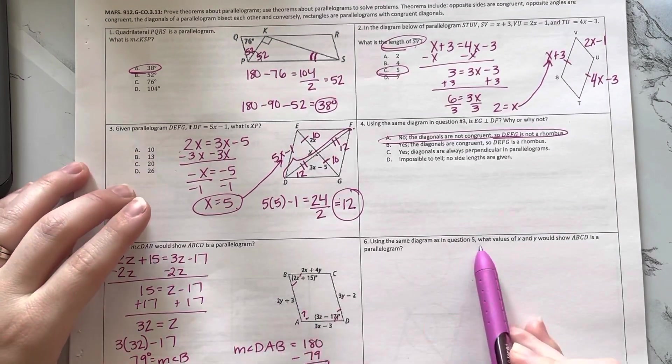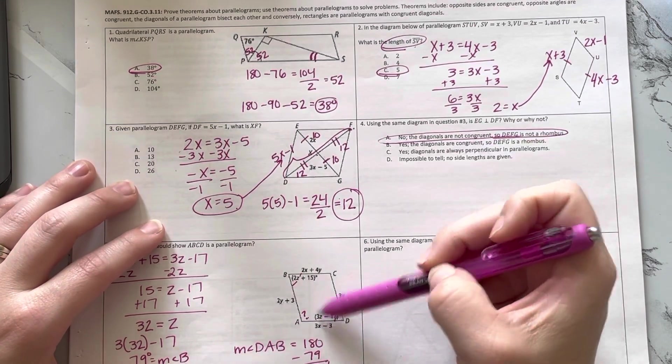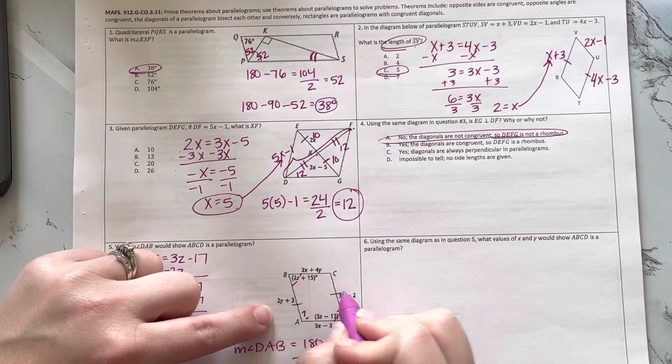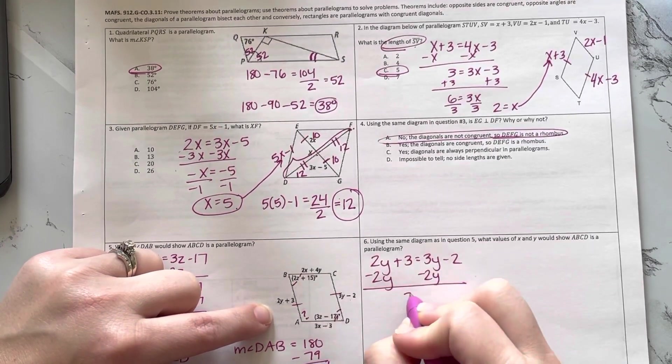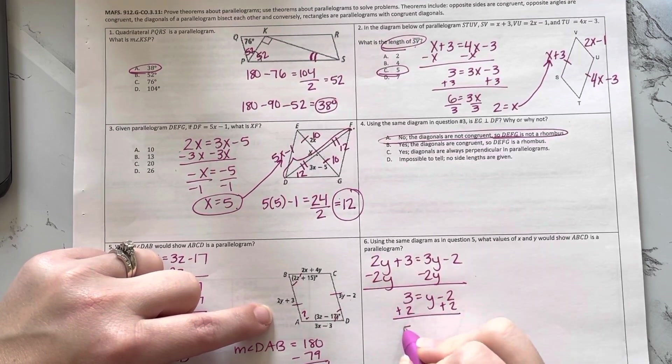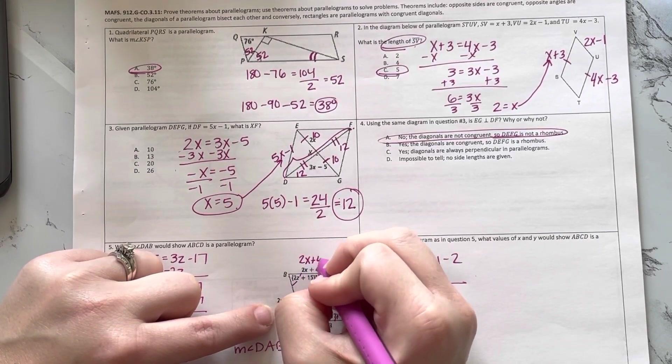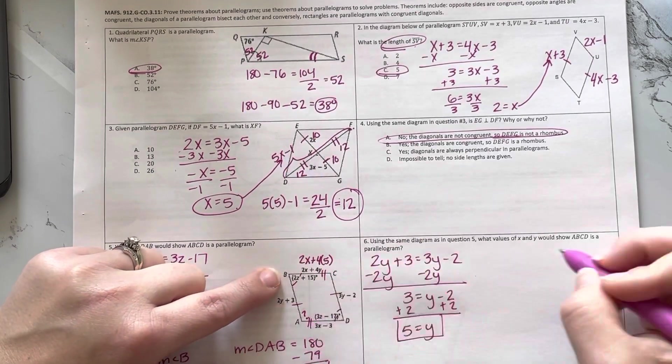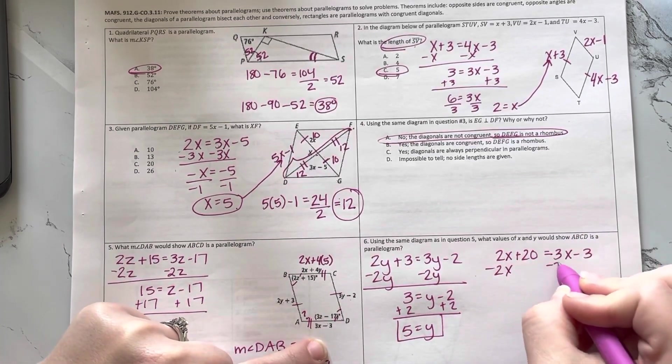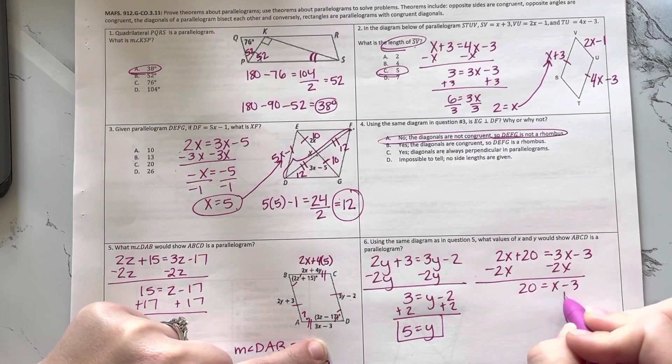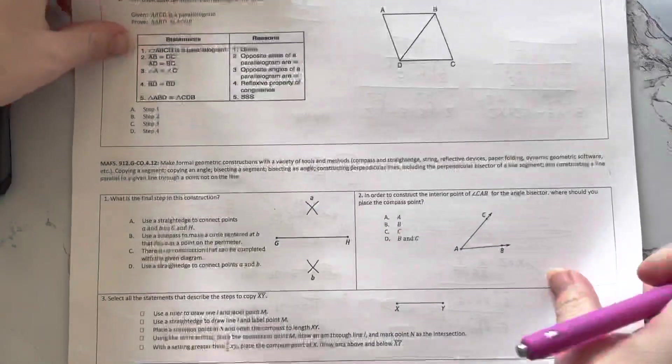Now this one uses this picture. It says what values of X and Y would show ABCD is a parallelogram. Opposite sides should be congruent. Now these have Y, this has X and X and Y. So I've got to solve this first. So 2Y plus 3 equals 3Y minus 2. So 3 equals Y minus 2. Add 2, so that's 5. I need to plug this in here so I can set these equal. So 2X plus, that's 20, equals 3X minus 3. Subtract 2X, add 3. Those are my values of X and Y.